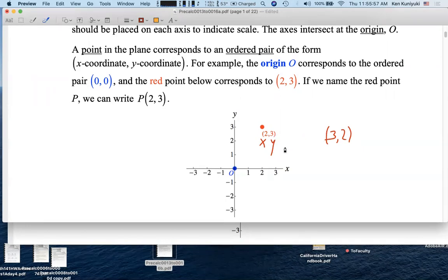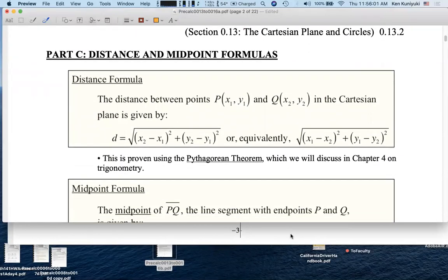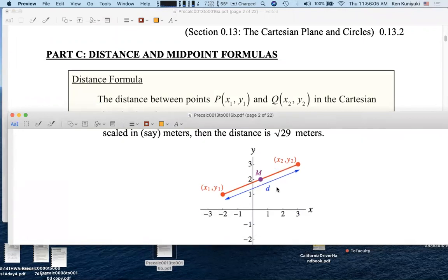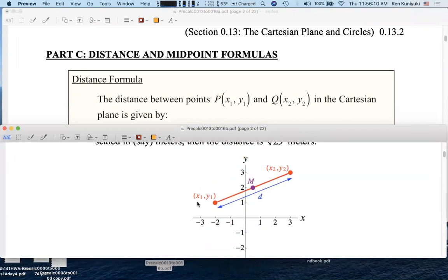Now, if we have two distinct points in the Cartesian plane, what can we try to figure out? Let's say we have these two generic points: (x₁, y₁) and (x₂, y₂), where these are all real coordinates. We might want to ask two questions.